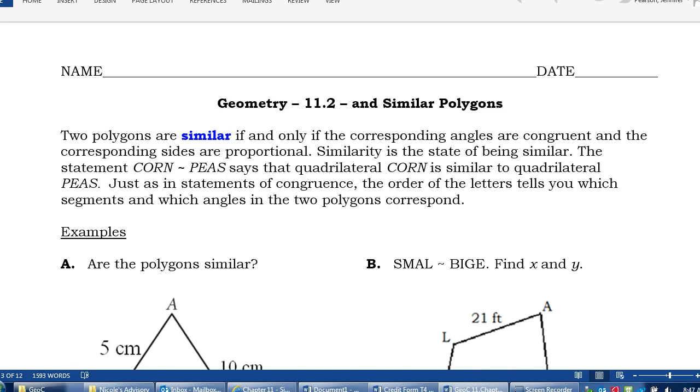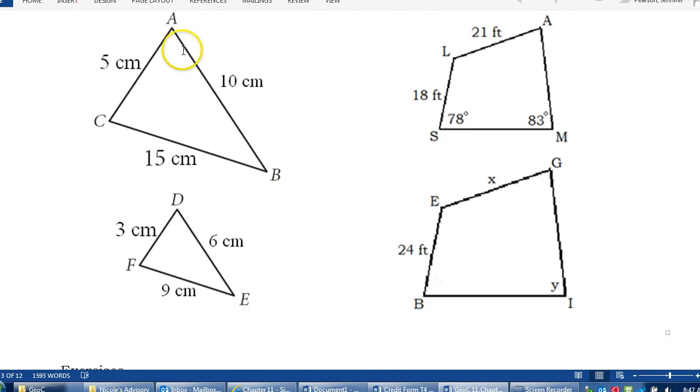So basically what that means is two polygons are similar if all the angles in both shapes are exactly the same. So this angle A has to be exactly the same as this angle D. C the same as F. B the same as E.